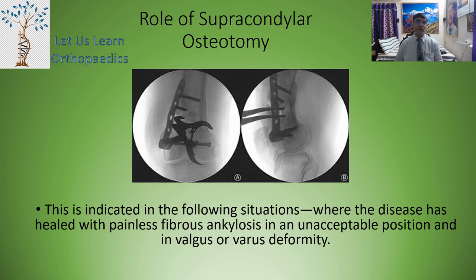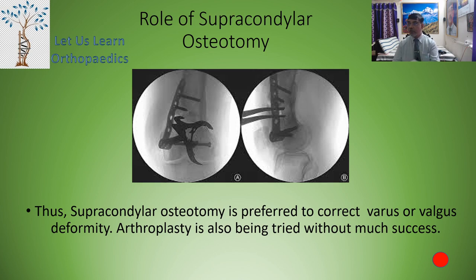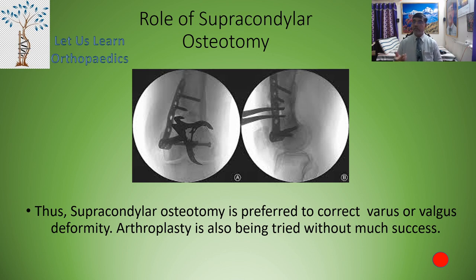Supracondylar arthrodesis is indicated when the disease has healed with painless fibrous ankylosis but in an unacceptable position, with valgus or varus deformity; it may be preferred to correct these deformities. Finally, arthroplasty has also been tried but without much success. That is all about tuberculosis of the knee joint. I hope it will help you write a short essay in your examination. We are not repeating the chemotherapy part as it has been covered in our previous lectures. Thank you.